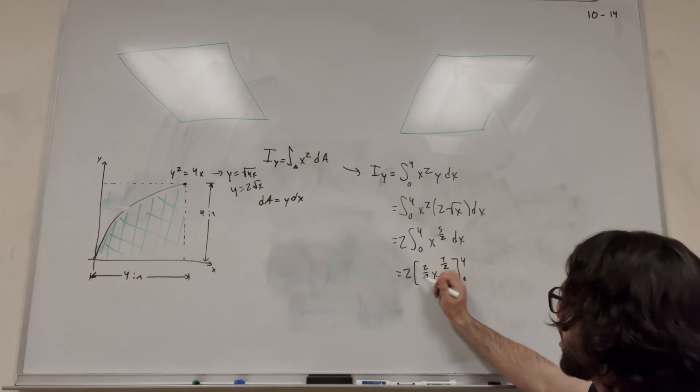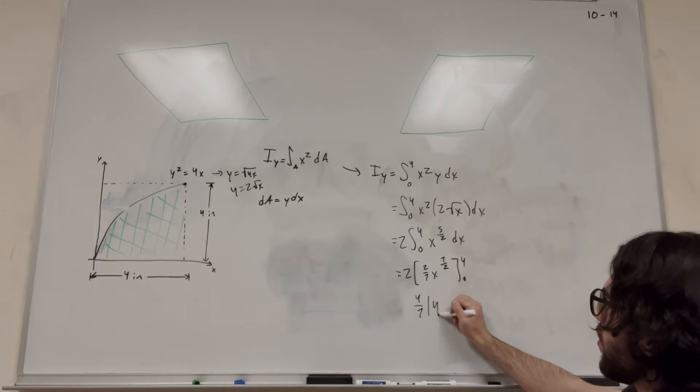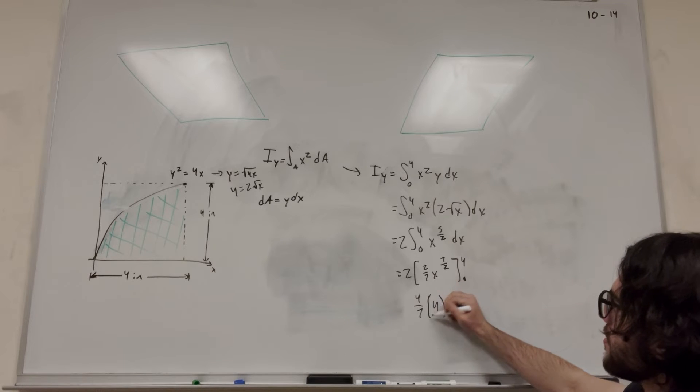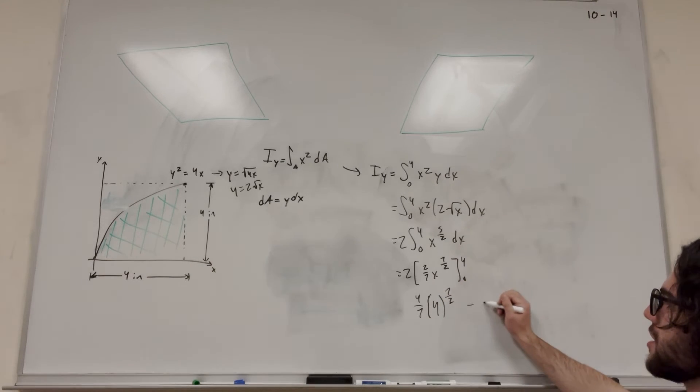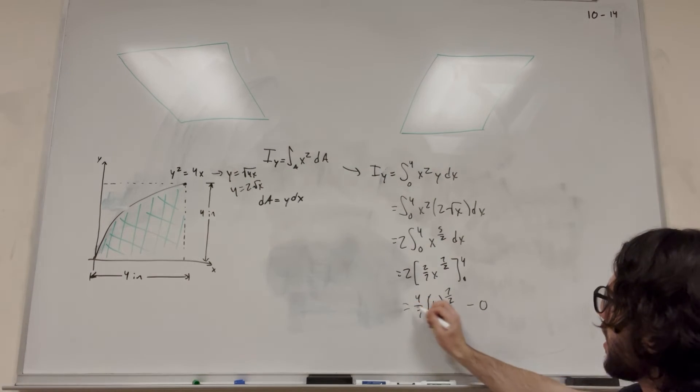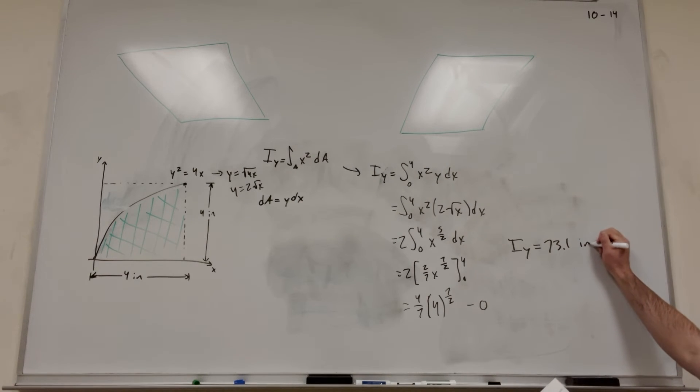So then we're going to combine like terms, 4 over 7, plug in 4, 4 to the 7 halves, and then this is going to be minus 0. So we're going to get that I_y is equal to 73.1 inches to the 4th.